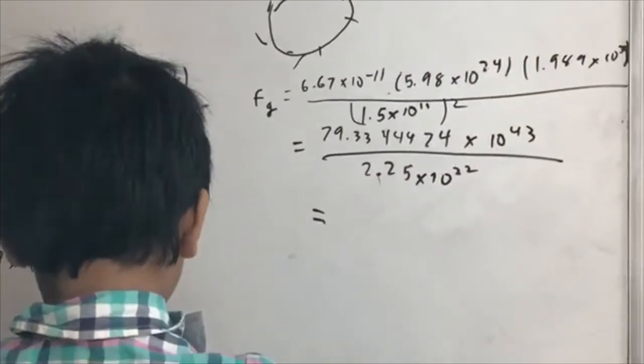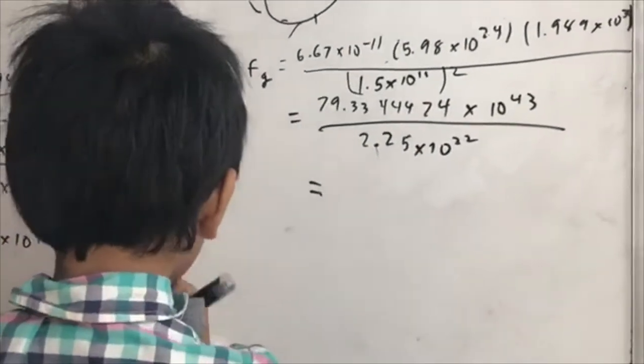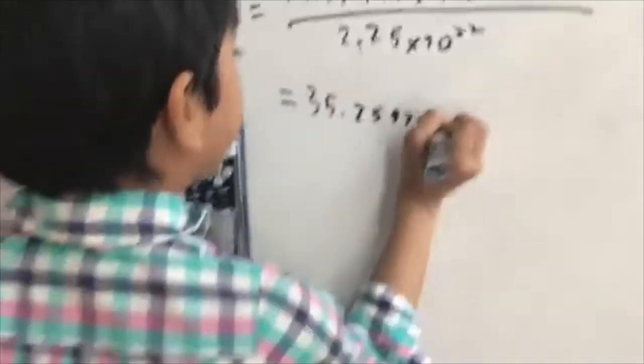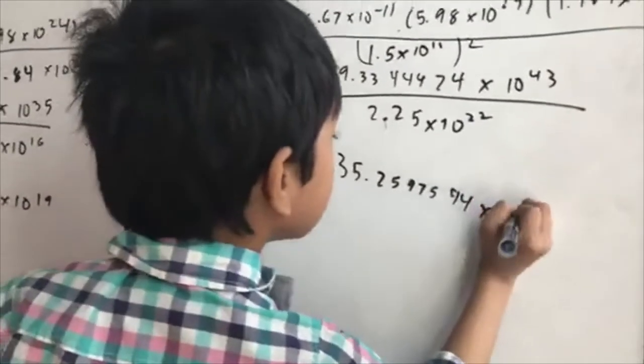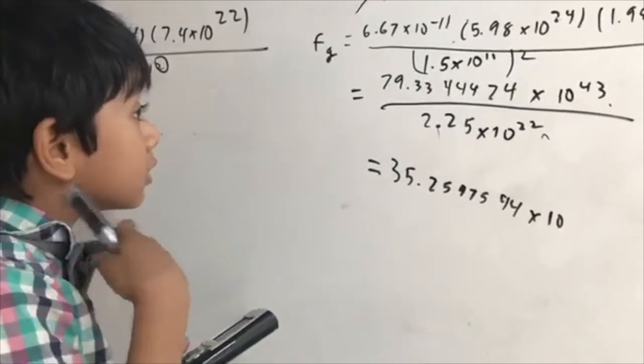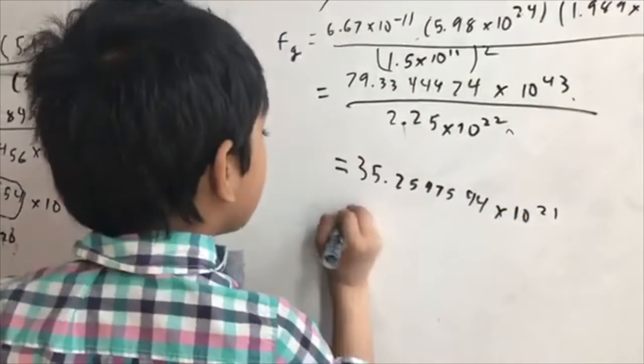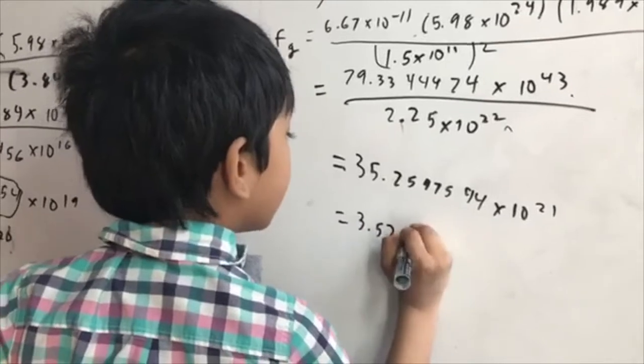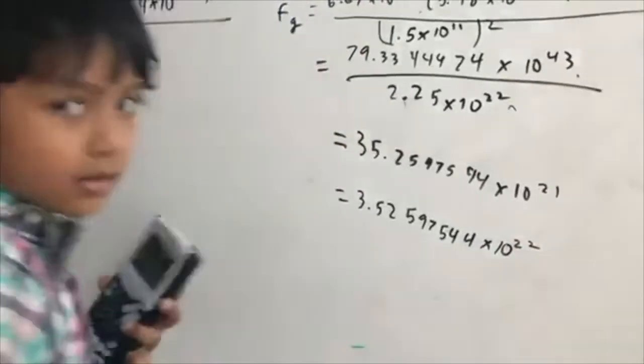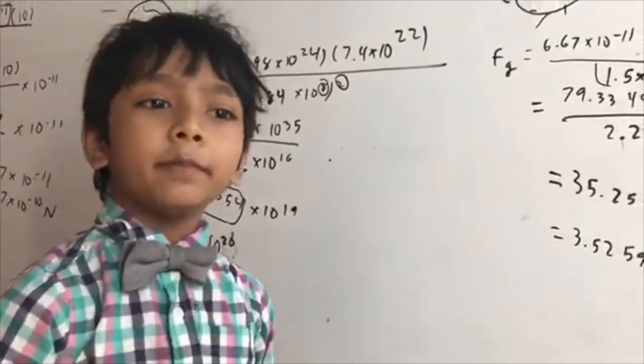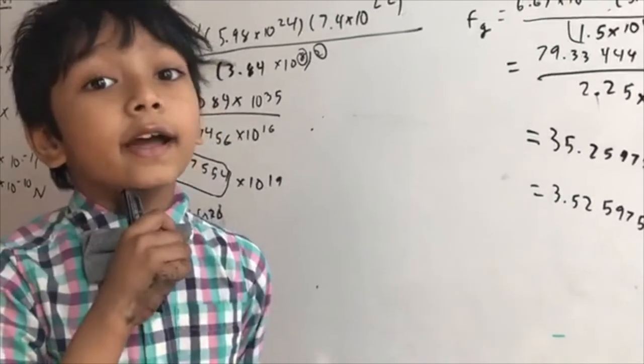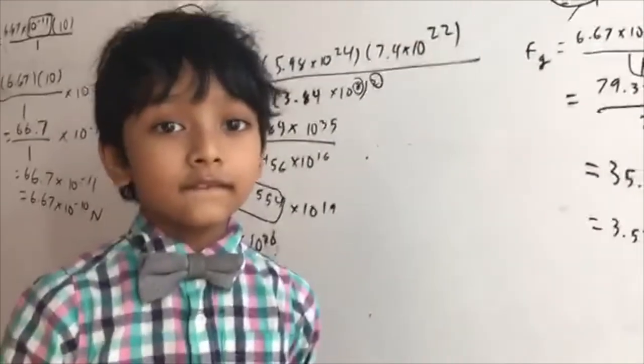Let's see our answer divided by 2.25. 35.2597544 times 10 raised to the 43 minus 22 is about 21. So, 3.52597544 times 10 raised to the 22nd. Thank you for watching. I hope you subscribe to Battery Science Lab for a more recent video. Sorry for not doing the incline and bye.